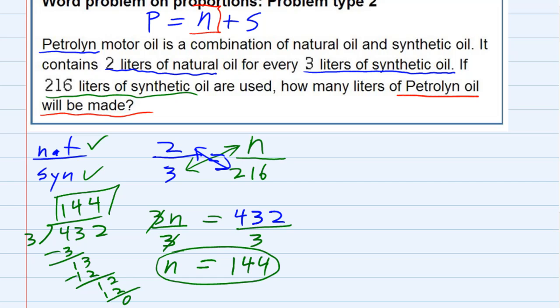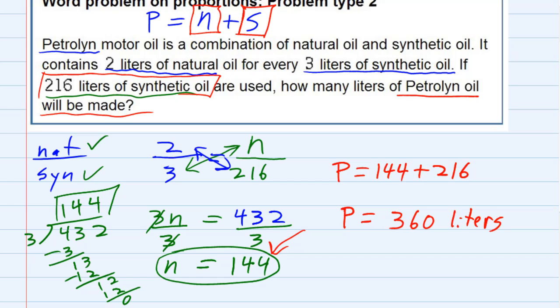Well Petrolin is what you get by taking the natural and adding the synthetic. So we had 216 synthetic and then we found out there's 144 natural. So we need to add those together. The Petrolin is going to be the 144 of natural that we had to find, plus the 216 of synthetic, that part we were told. And if we add those two together, we will see that Petrolin, we have 360 liters of oil.